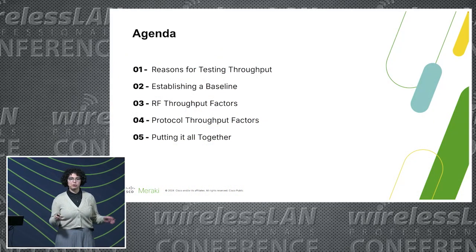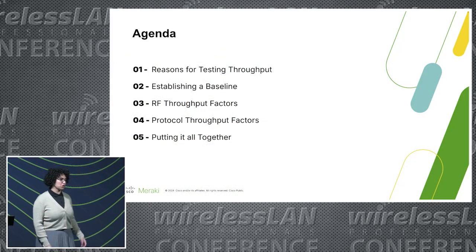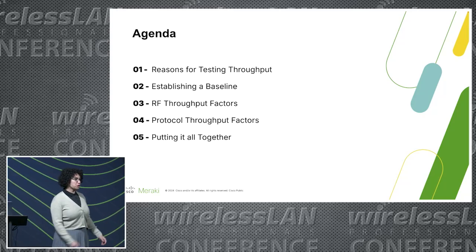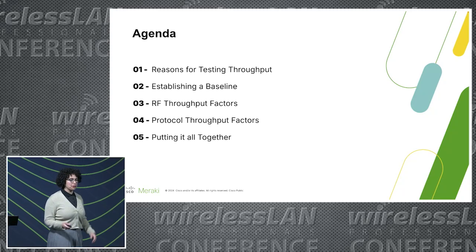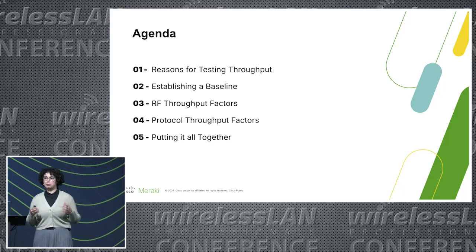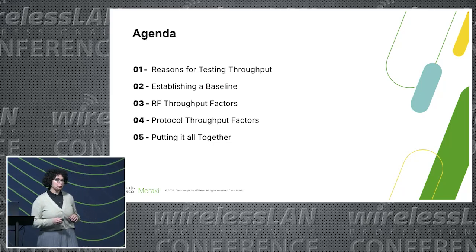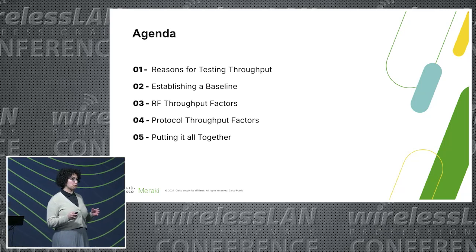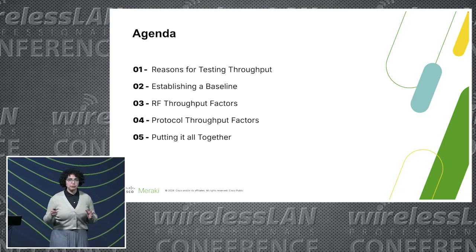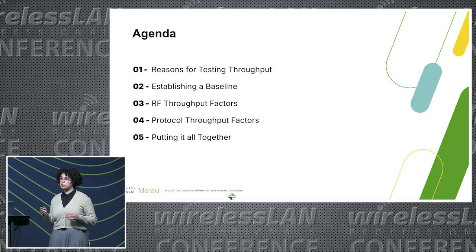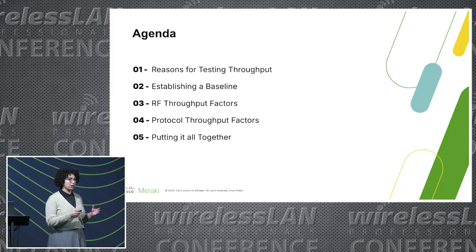To explore that question, we'll be going through a series of things. First, why you would even test throughput; then how to establish a reasonable baseline for your particular environment; after that, some physical layer causes for throughput degradation; then the protocol causes for throughput degradation; and lastly, I'll put it all together in a way that you can actually take and use in your environment.